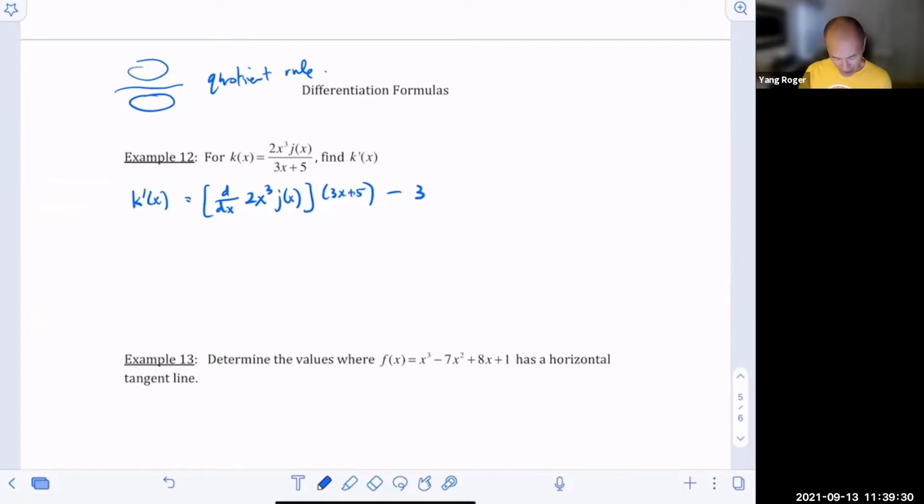And then, we need to do times the first thing, which is going to be 2x cubed j(x), all divided by the bottom squared, bottom squared is going to be 3x plus 5 squared.